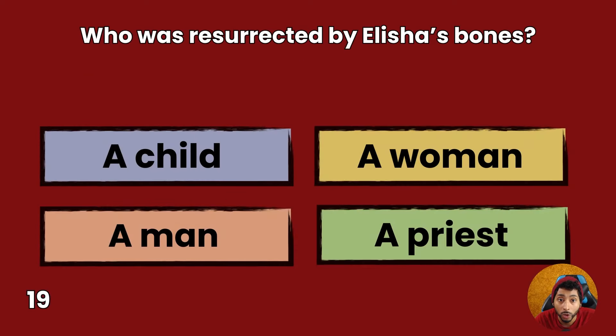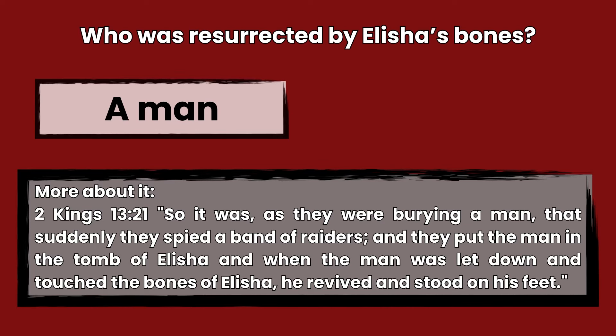Question 19: Who was resurrected by Elisha's bones? A child, a woman, a man, or a priest? Answer: A man. 2 Kings 13:21 — So it was, as they were burying a man, that suddenly they spied a band of raiders, and they put the man in the tomb of Elisha. And when the man was let down and touched the bones of Elisha, he revived and stood on his feet.